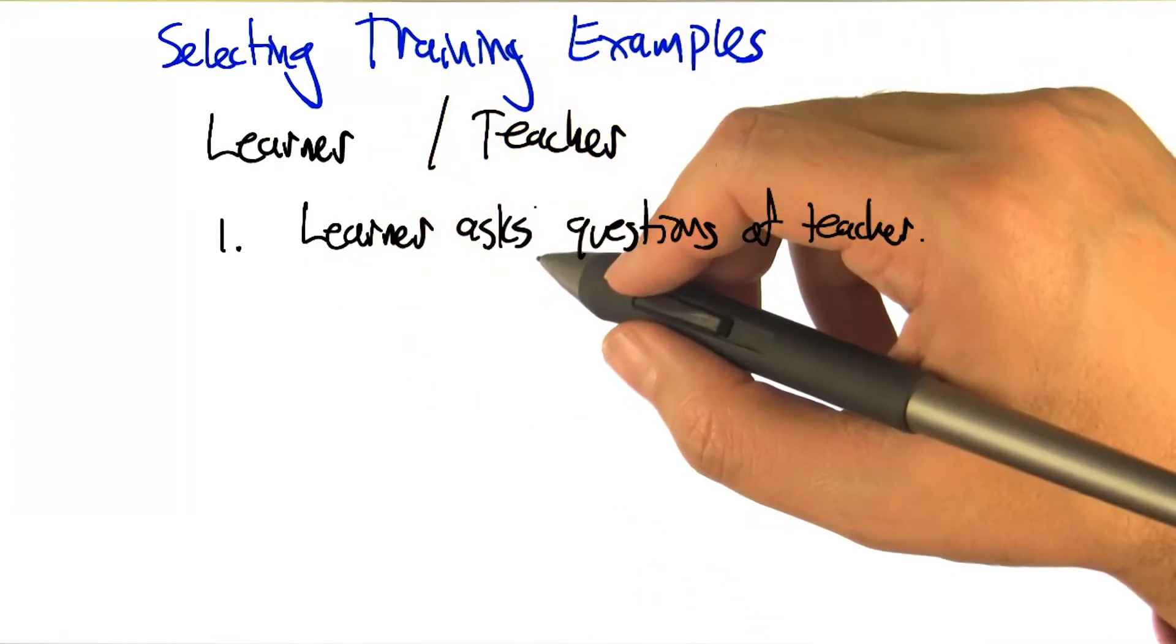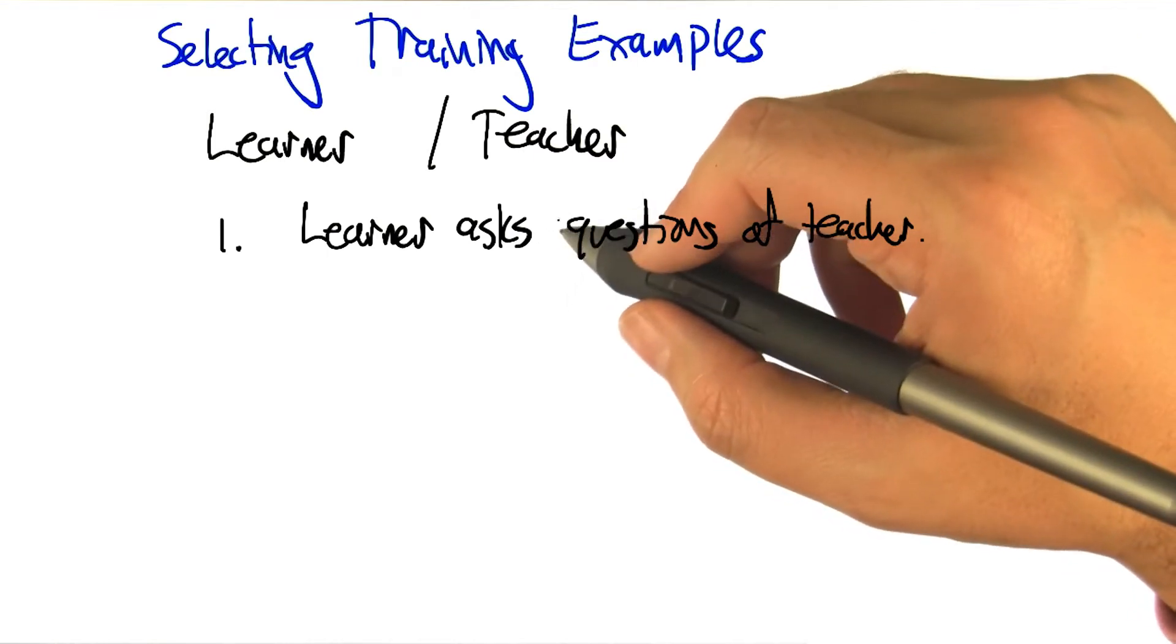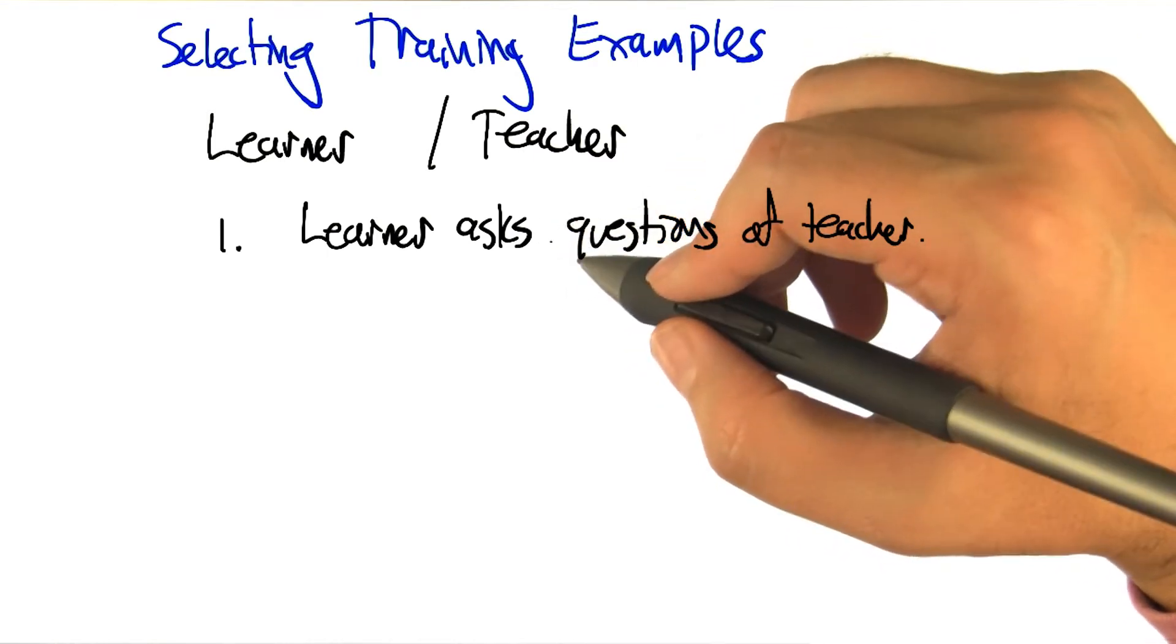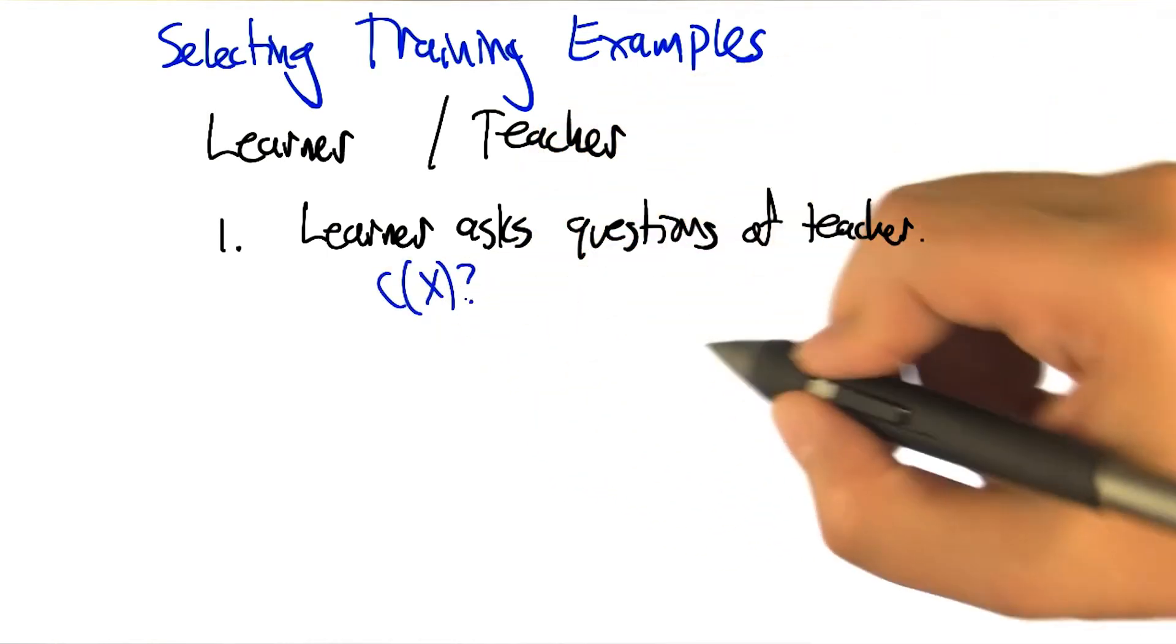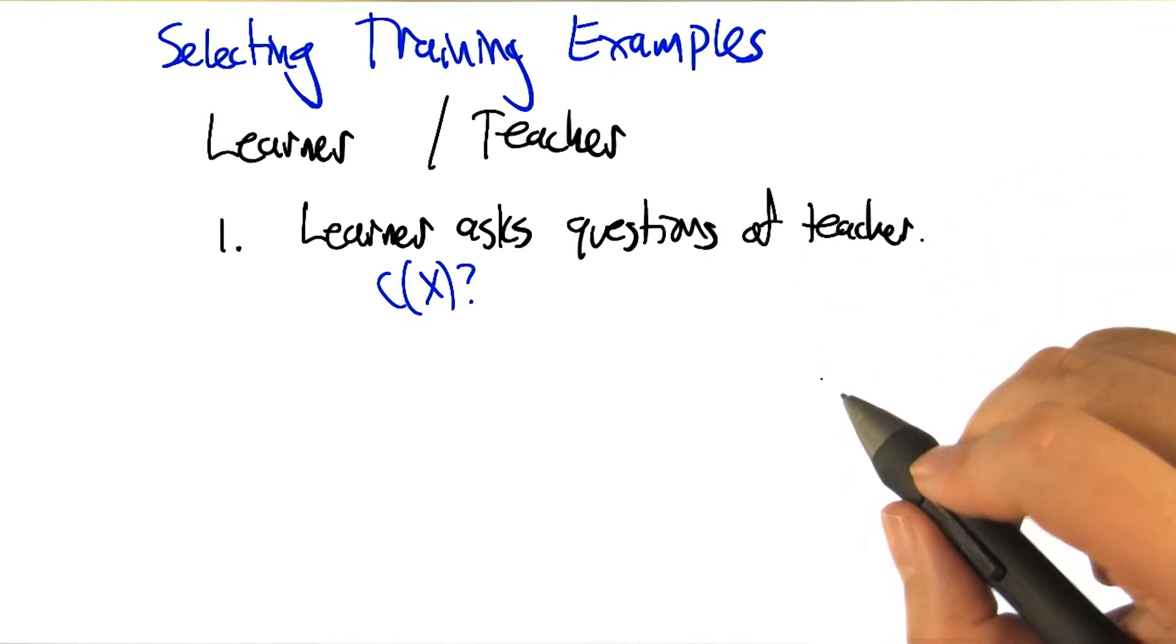I see. So in this case, the learner would be selecting the training examples. The learner would say, here's an input x. Would you please tell me c of x? Right. That's exactly what I'm thinking.